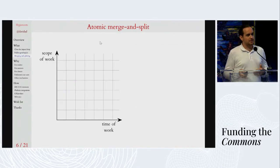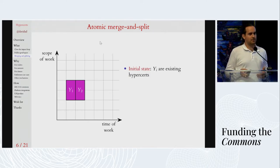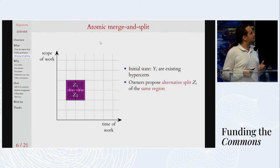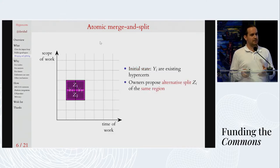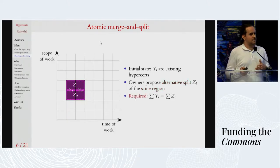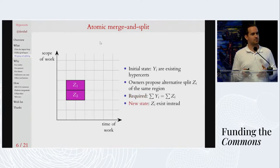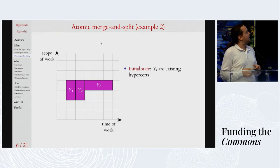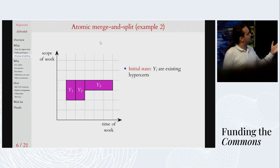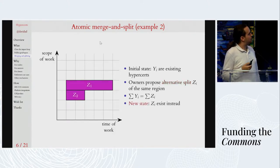Now I'm going to talk about the core operation that hypercerts need to support, which is atomic merge and split. If I have two hypercerts Y1 and Y2, and the owners want to propose a different way of splitting up the same region of public goods space, then as long as the before and after sets add up to the same region, this is an allowable transaction. Here's another example: three incoming hypercerts add up to the same region as two outgoing hypercerts — that's a valid transaction.